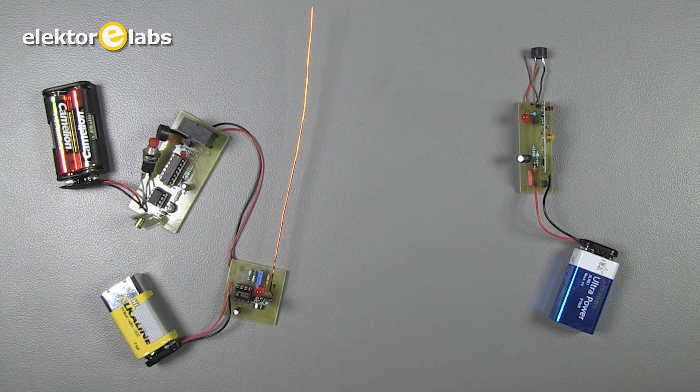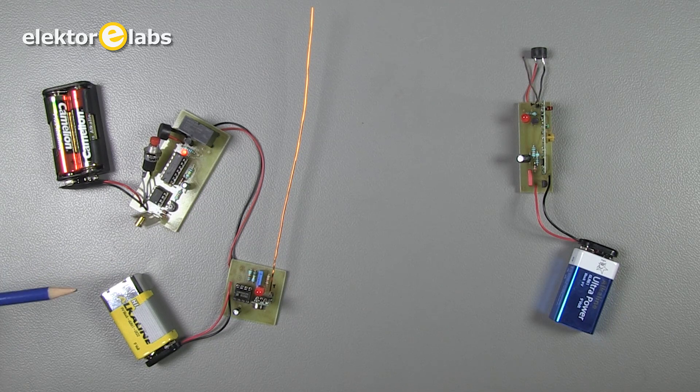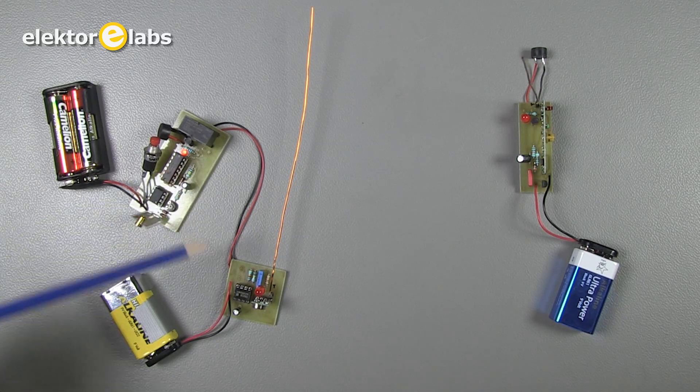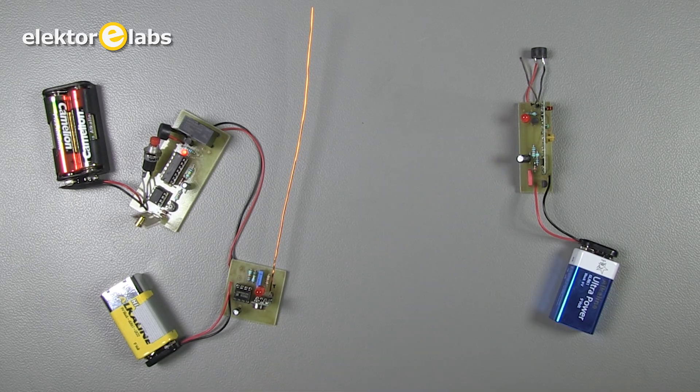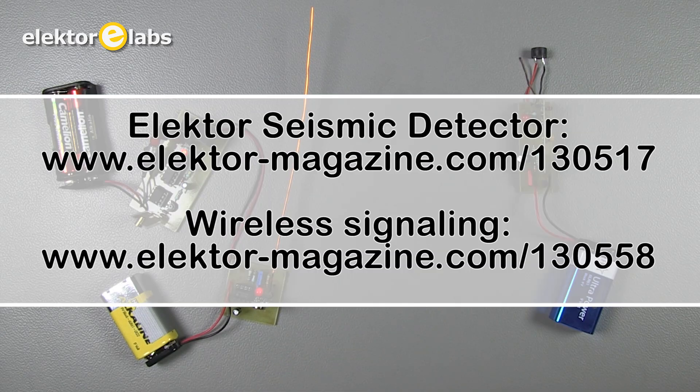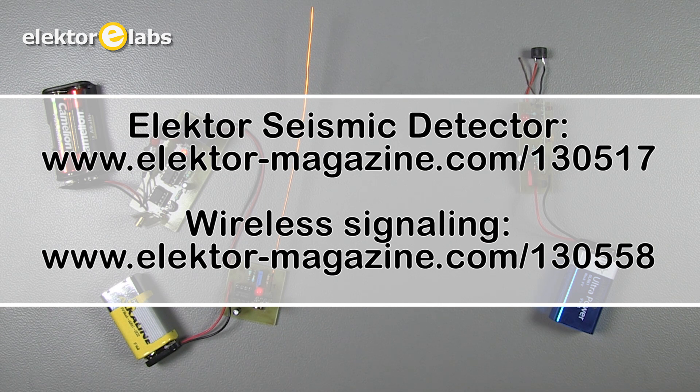On the receiver side, the LED will light up and you will hear the intermittent noise from the buzzer. You can find all the details about the seismic detector and the wireless signaling modules on our website www.elektormagazine.com.